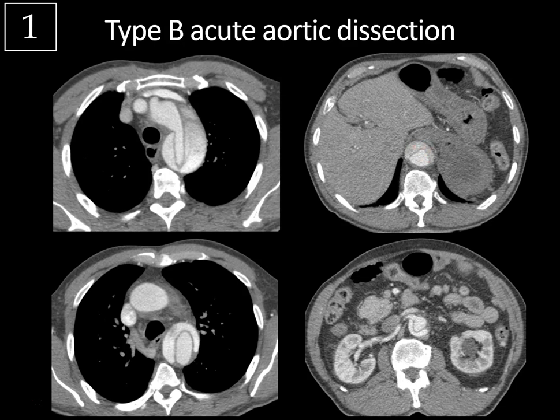You can tell this is an acute dissection because the intimal flap is bowed. In a chronic dissection it tends to straighten out and the false lumen will slowly thrombose over time. The right renal artery is coming off the true lumen, which is typically the case, while the left renal artery often comes off the false lumen. Always check if the dissection flap occludes the renal arteries — you might have a renal infarct — and also check for extension to the mesenteric vasculature.